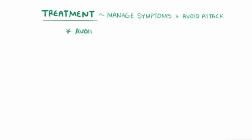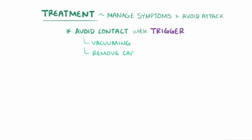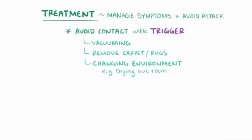First, people with asthma should avoid or minimize contact with triggering substances by vacuuming, removing carpets and rugs, and changing the environmental conditions, like for example drying out a room in the case of molds that grow well in moist areas.